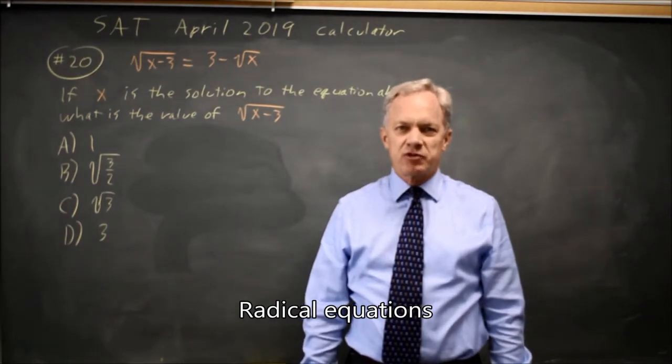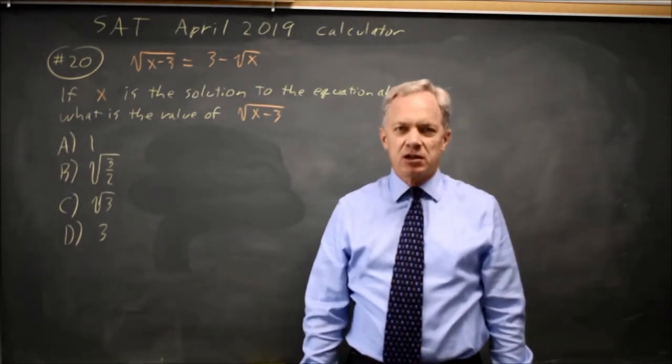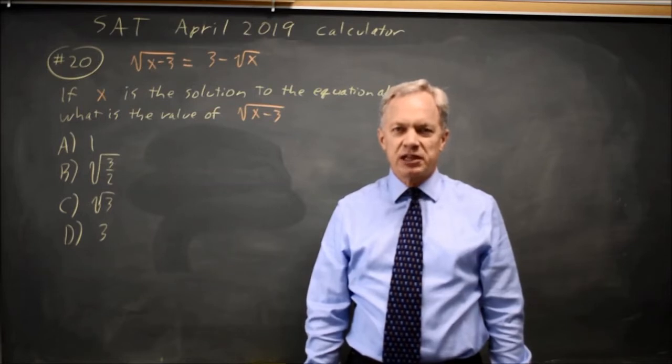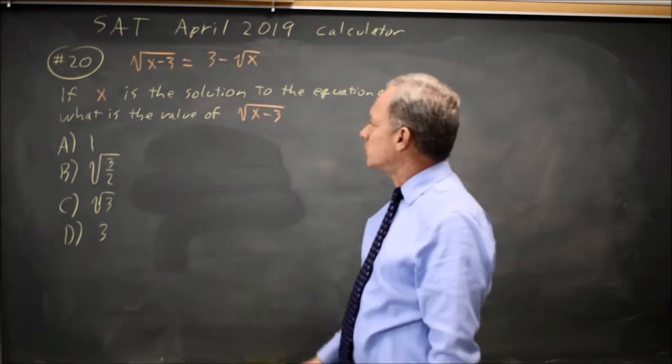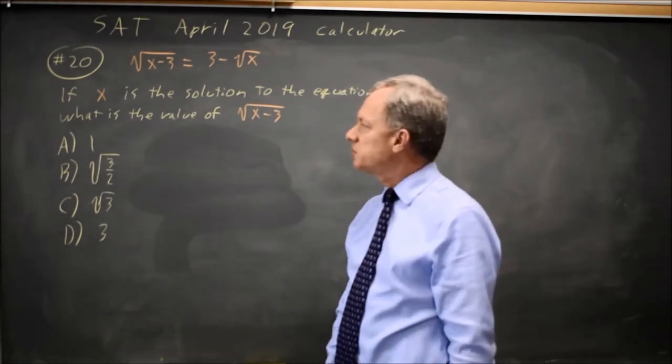This is calculator question number 20 from the April 2019 SAT. The College Board gives us a radical equation and asks us for the awkward expression root x minus 3 if x is the solution.